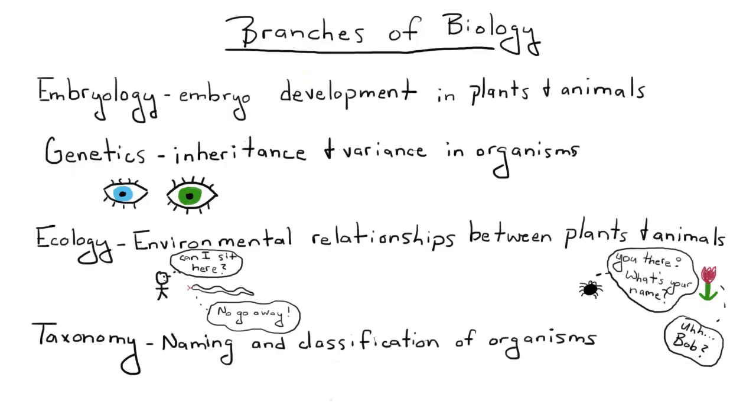There's embryology, which is the study of embryo development in plants and animals. Genetics is the study of inheritance and variance in organisms. For example, some people have blue eyes, but some people have green eyes.